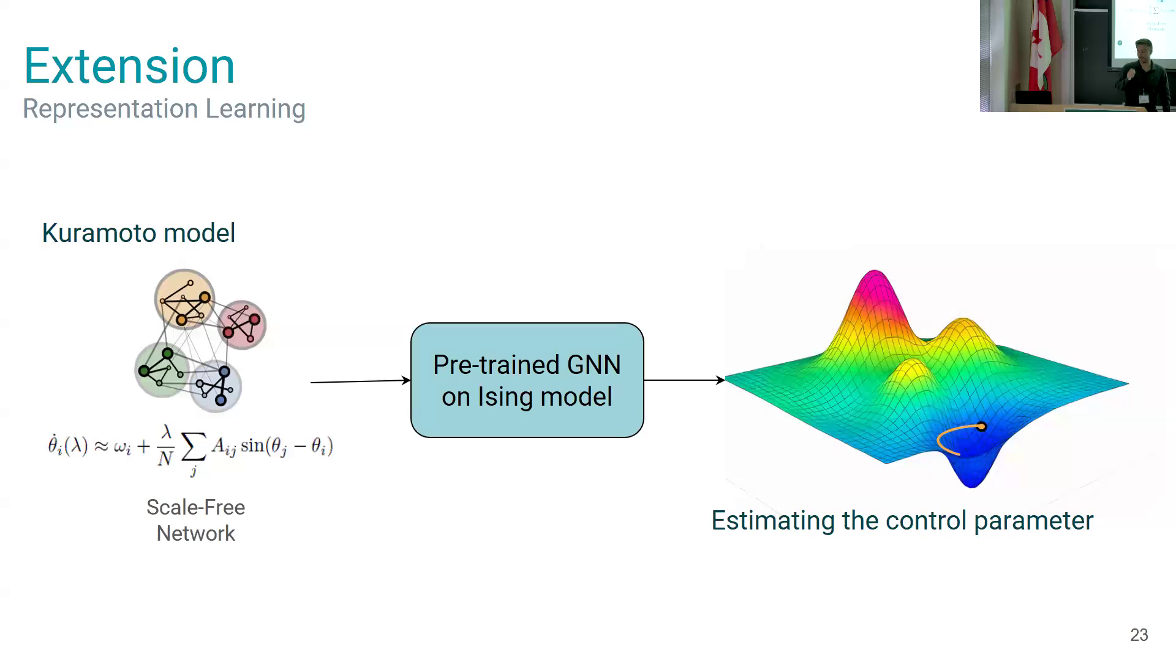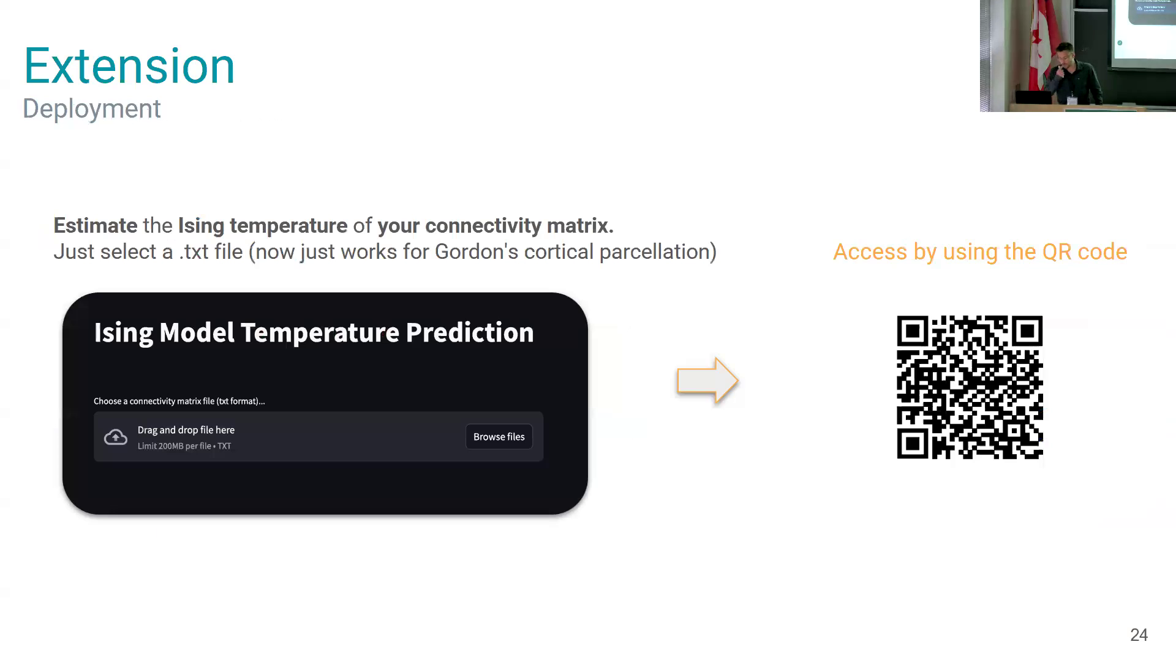Just an extension, and I think this one is really cool. If you get this pre-trained model, this pre-trained GNN on Ising models, and you want to predict the control parameter of a Kuramoto model in a scale-free network, it actually starts in a minima. Which I think is really interesting because it looks like this kind of deep learning models trained on simulations can get a really smart representation of those complex systems and maybe encode more deep information than we are actually capturing with the control parameter.